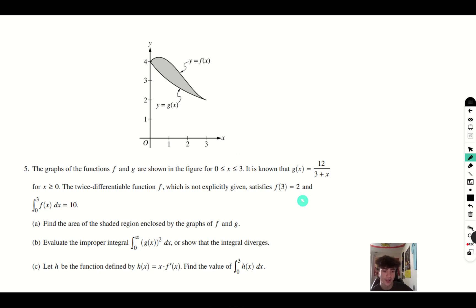Part A asks us to find the area of the shaded region. The shaded region is just going to be top minus bottom from 0 to 3. So we have the integral from 0 to 3 of f of x minus g of x dx. We can separate this into two integrals. The integral from 0 to 3 of f of x dx is 10, so you get 10 minus the integral from 0 to 3 of g of x dx.